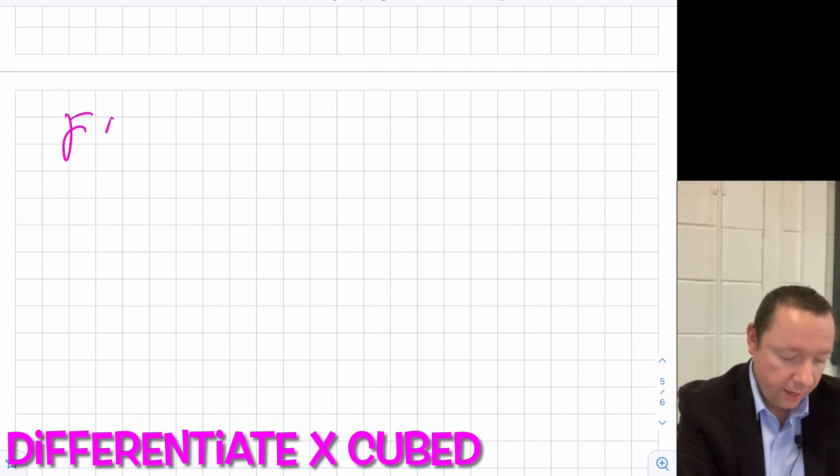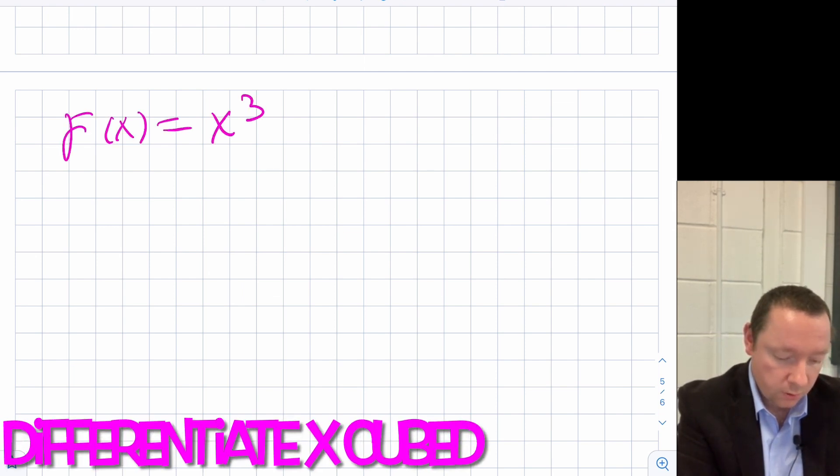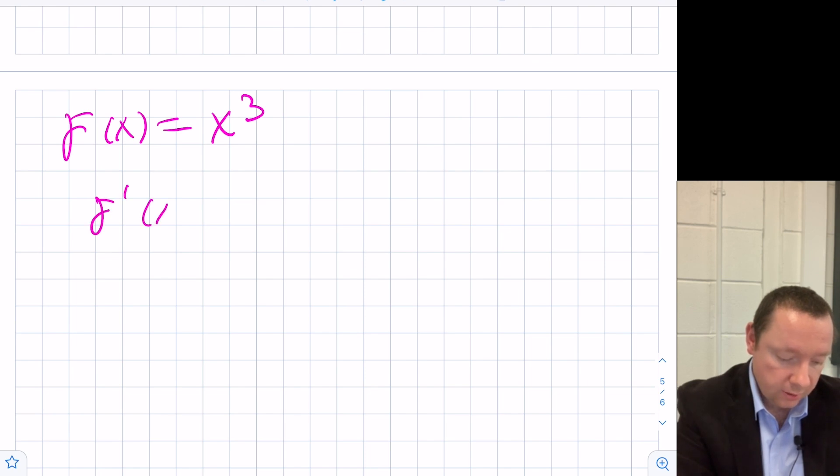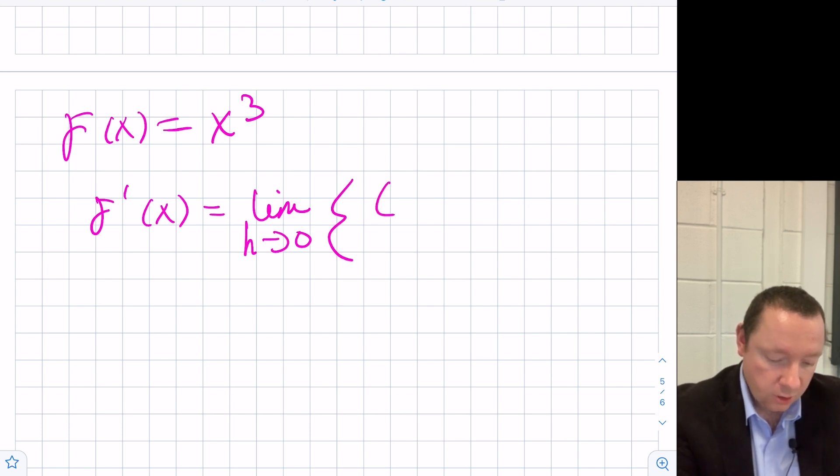Let's say we had f of x equal to x cubed. Then f dash x would be the limit as h goes to zero of f of x plus h. So x plus h cubed minus x cubed f of x all over h.